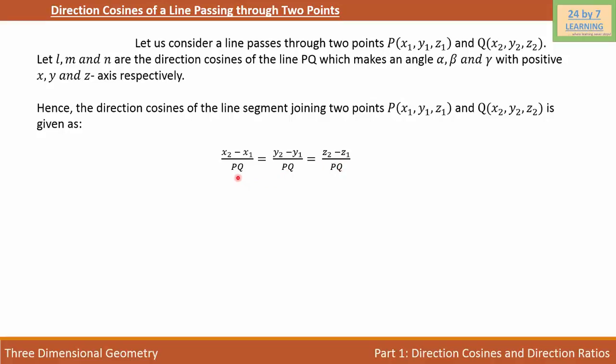Now you must be wondering how to find PQ. You can find PQ using the distance formula, which is PQ equals square root of (X2 minus X1) square plus (Y2 minus Y1) square plus (Z2 minus Z1) square.